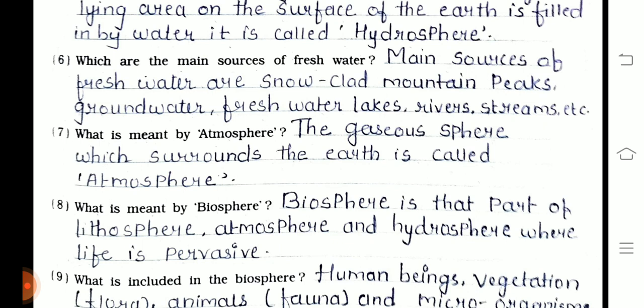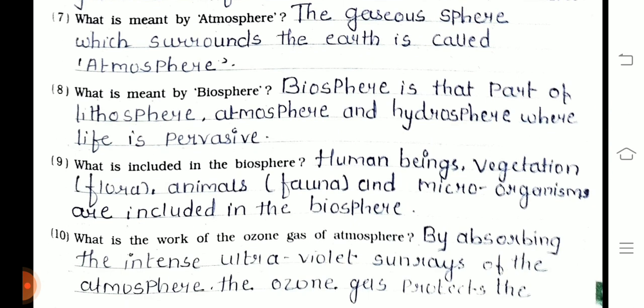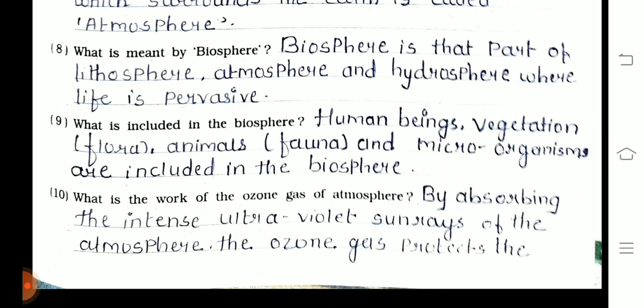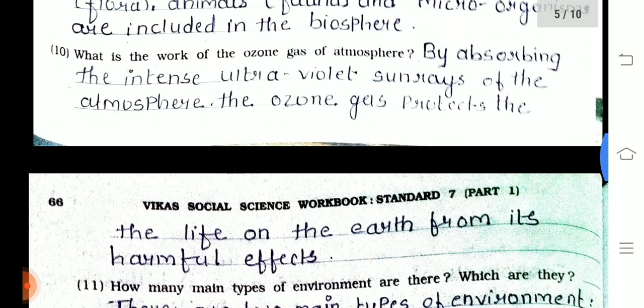Seventh one — what is meant by atmosphere? The gaseous sphere which surrounds the earth is called atmosphere. Eighth one — what is meant by biosphere? The biosphere is that part of lithosphere, atmosphere, and hydrosphere where life is present. Ninth one — what is included in the biosphere? Human beings, vegetation, animals, and microorganisms are included in the biosphere.